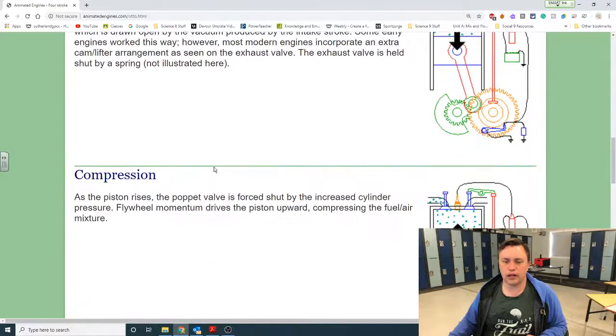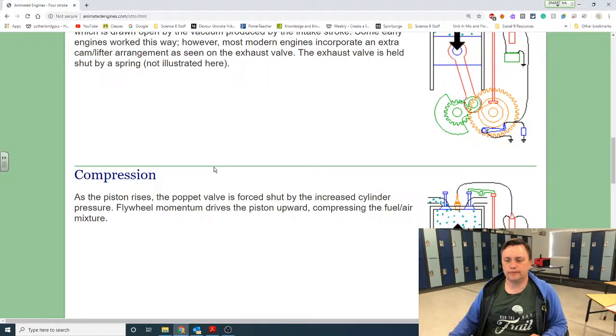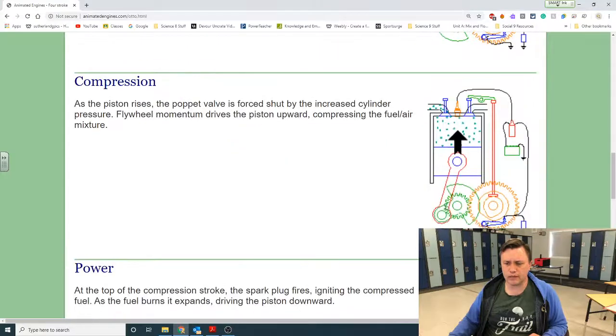When your parents talk about RPMs, they're talking about how many times this is rotating per minute. If you have a V6, there's going to be six cylinders in your vehicle having this happen to spin this shaft, which in turn spins this shaft.